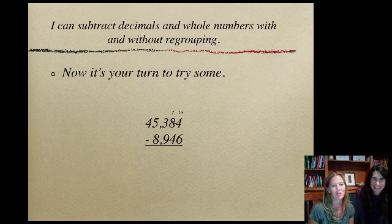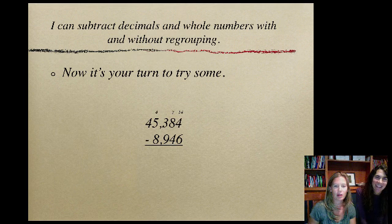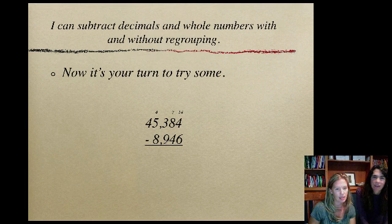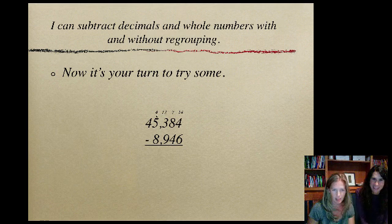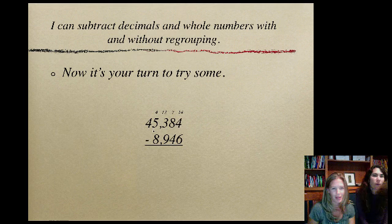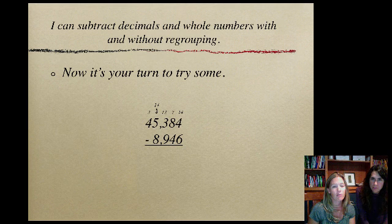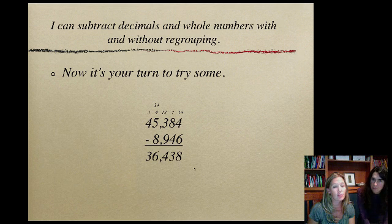Now I do seven minus four. Can I do that? Yes. Now I'm looking at my next column over: three take away nine. Nine is bigger, have to borrow. So I ungroup my thousands place, which leaves me with four thousands, and now I have thirteen hundreds. Can I do thirteen minus nine? Yes. Four minus eight? No. So ungroup my four ten thousands, leaves me with three, and now I have fourteen thousands minus eight, which I can do. When you go through and have all these subtracted out, you end up with 36,438.